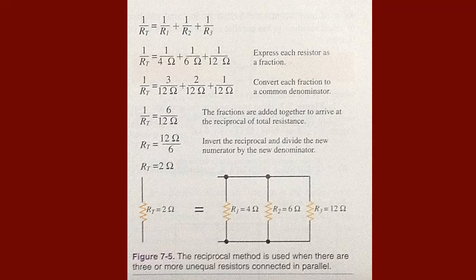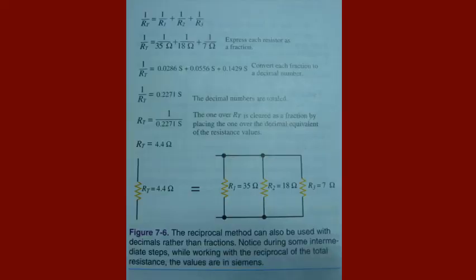Most circuits do not have resistance values that lend themselves neatly to simple fractions. However, the reciprocal method can be used in these situations by converting individual values to decimals. In figure 7-6, resistors of 35, 18, and 7 ohms are connected in parallel. Using a calculator, the three reciprocal values total 0.2271. The total resistance equals 1 divided by 0.2271, or approximately 4.4 ohms.